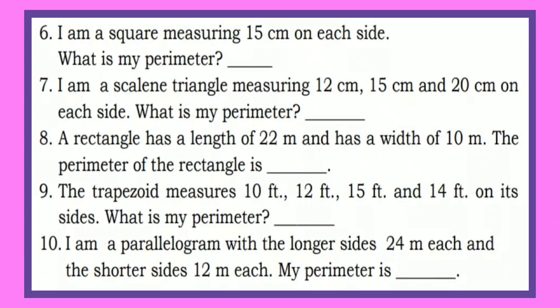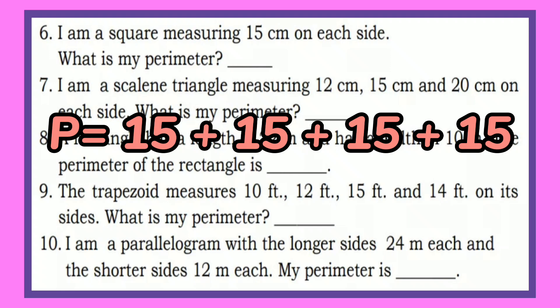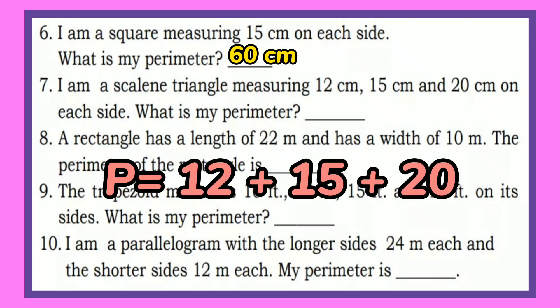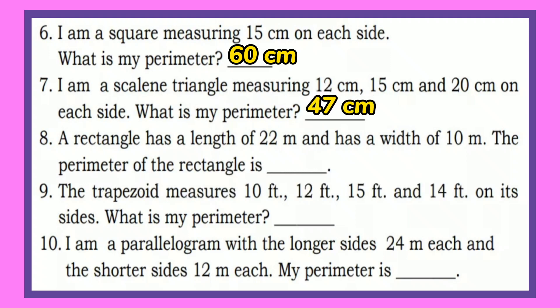Number 6: I am a square measuring 15 centimeters on each side. What is my perimeter? 15 plus 15 plus 15 plus 15 gives you 60 centimeters. Number 7: 12 plus 15 plus 15 plus 20 and the perimeter is 47 centimeters.